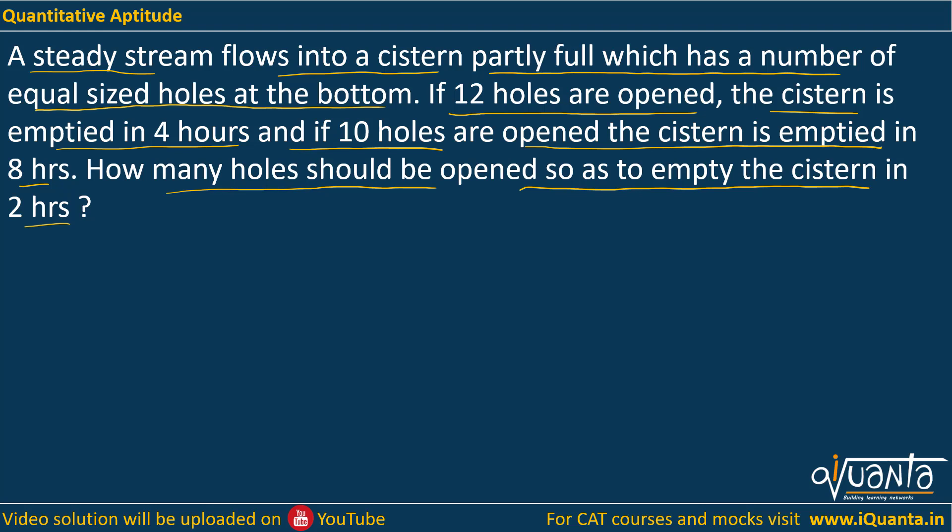Now we have no idea about the volume of the cistern so let it be V. I have to keep in mind the rate at which water is flowing into and out of the cistern. Let me assume that rate of inflow is a units per hour. Similarly we have some holes due to which we have an outflow. Let me assume that every hole is taking out b units per hour. Inflow is always counted as positive work, this is always counted as negative work, outflow.